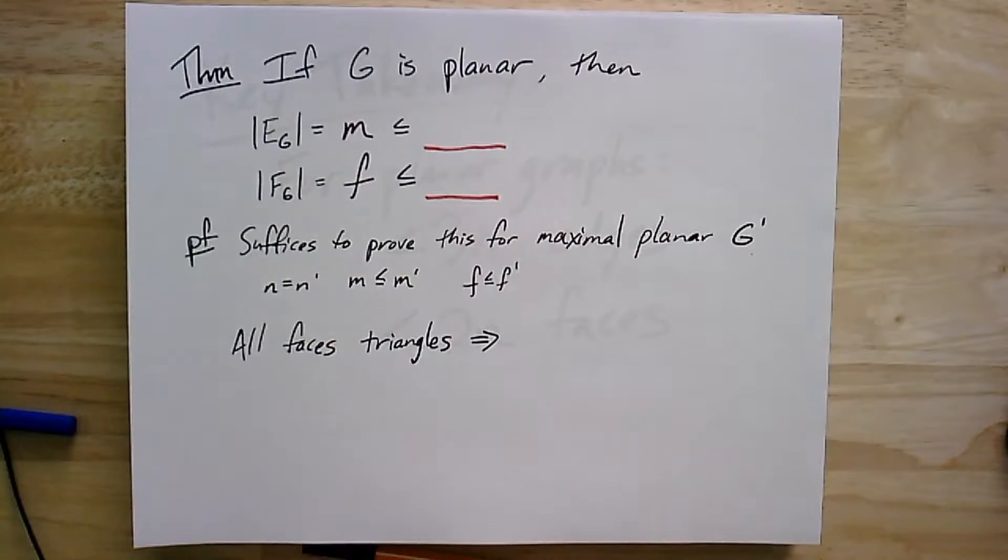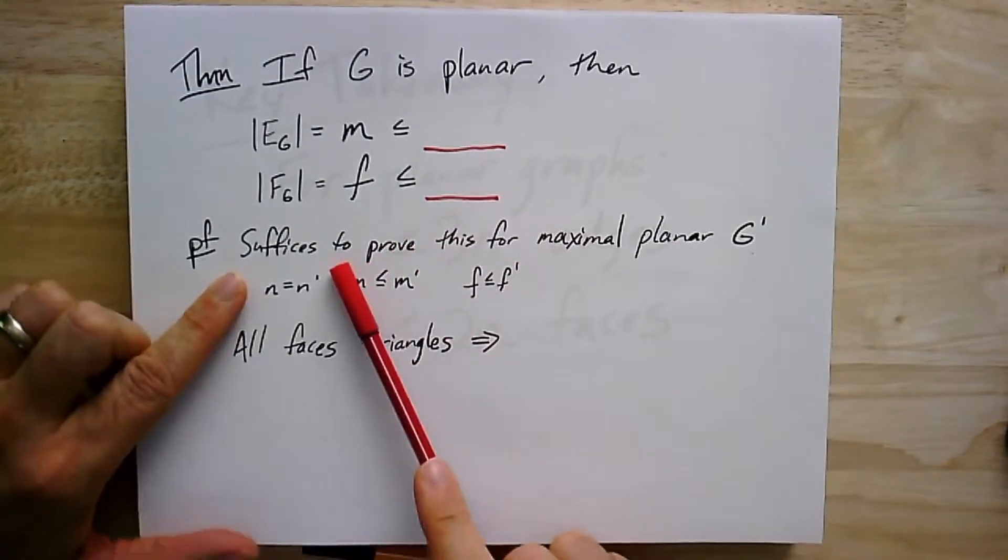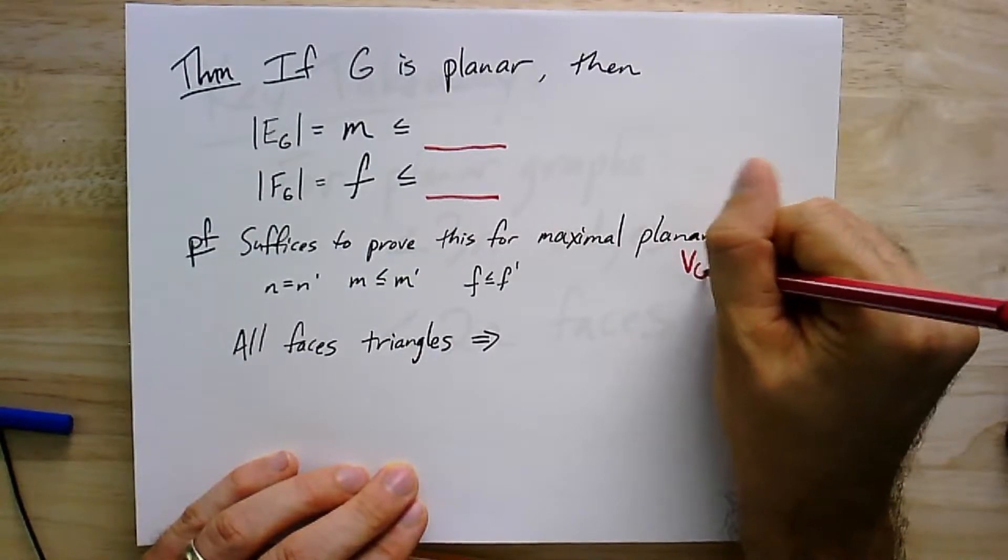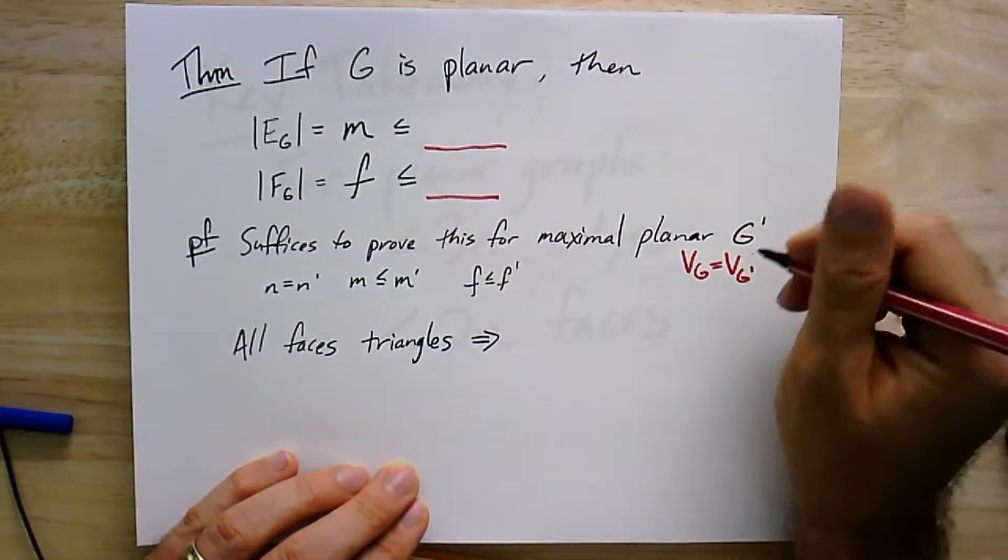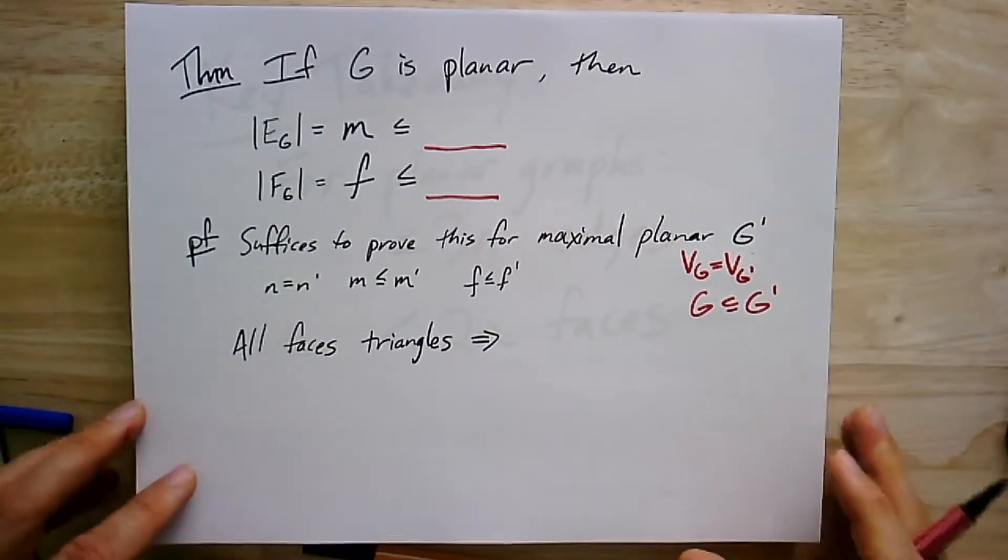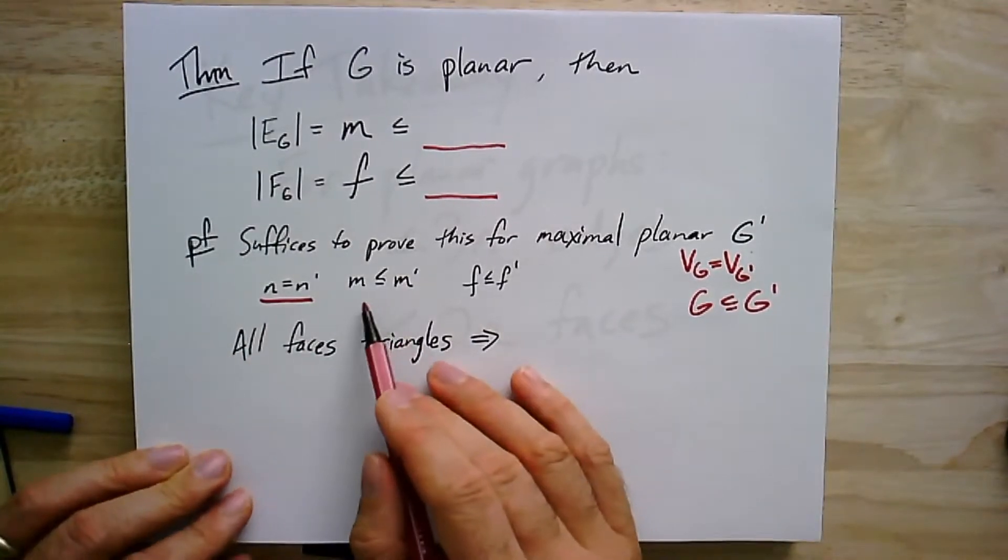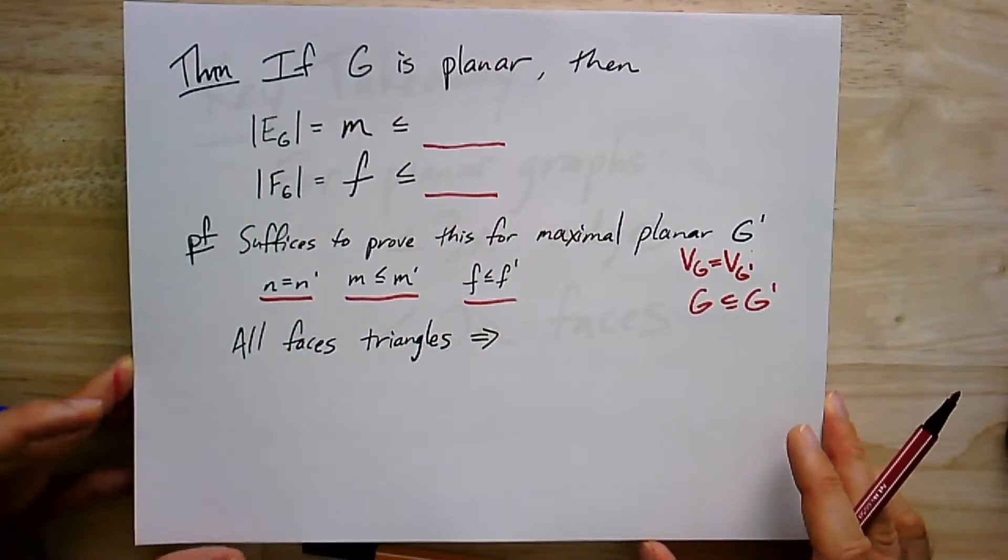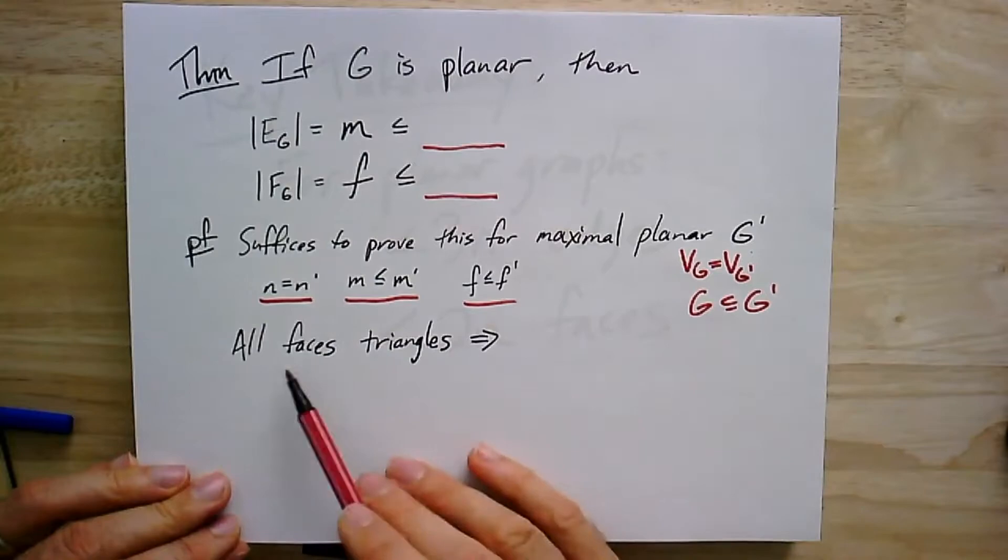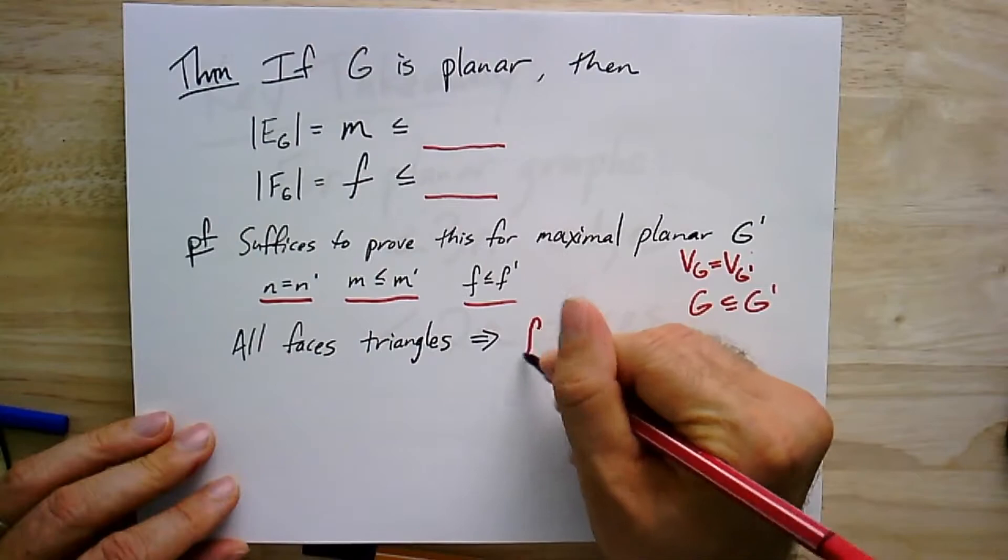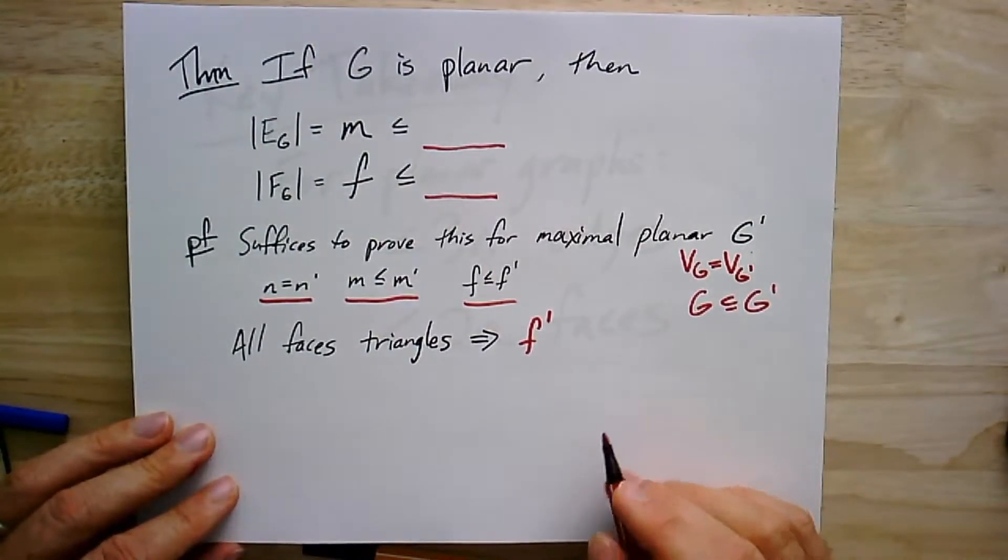So here's the idea. I'm going to claim that first, it's going to suffice to prove a bound for a maximal planar graph that is on the same vertex set. So I've got V_G equals V_G', and G is a subset of G'. It's a subgraph. So the same number of vertices, I've just increased the number of edges and possibly increased the number of faces. Now, we know in the case for maximal planar graphs, all the faces are going to be triangles. That was our main theorem we just proved.